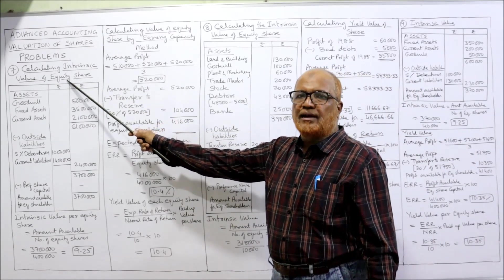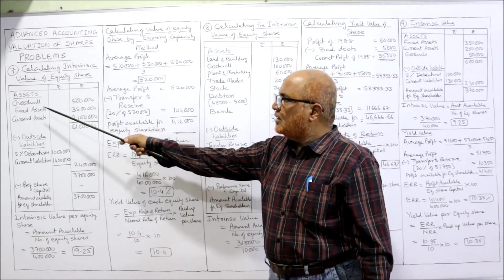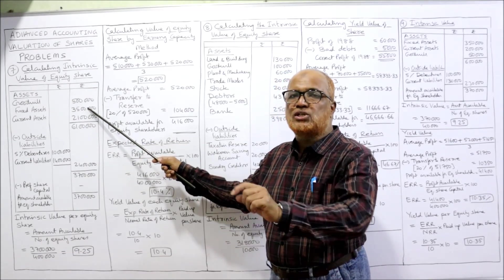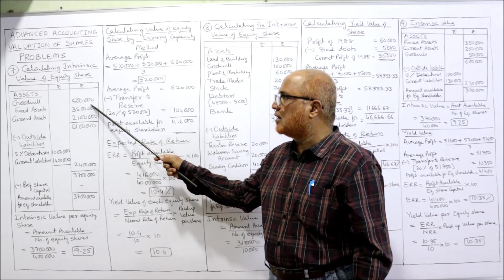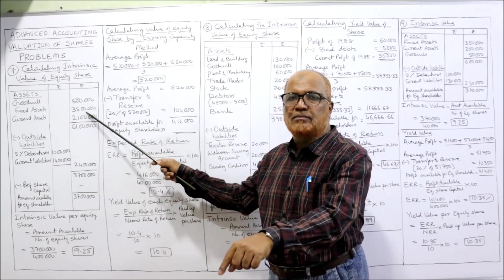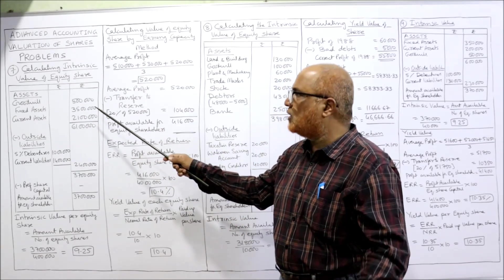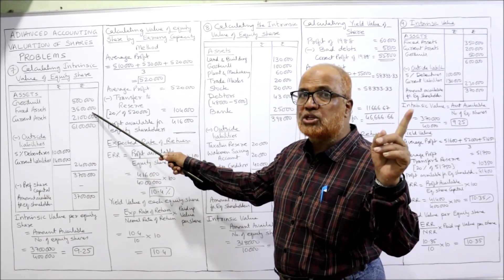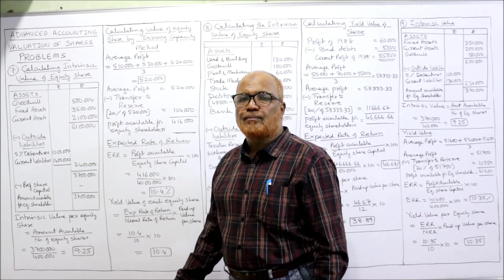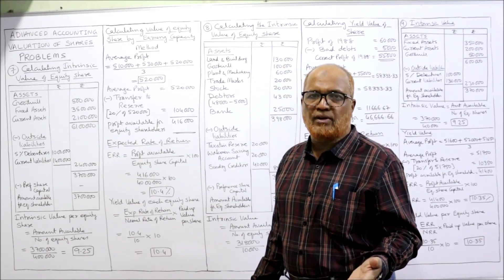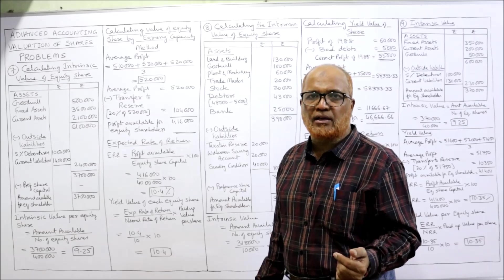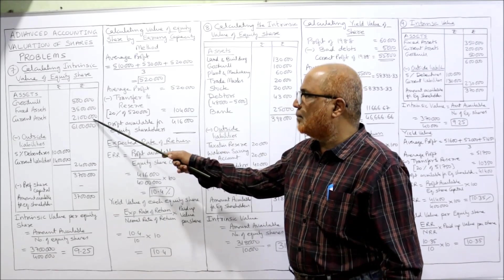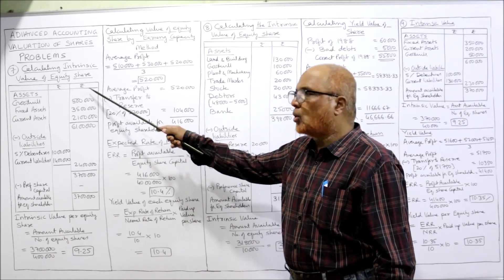Now calculating the intrinsic value. Take the assets: goodwill — present value is given in the adjustment. Fixed asset — present value given in the adjustment: 35 lakh. We are not taking the balance sheet value. Current assets — balance sheet value is given, so we are taking balance sheet value since current value is not given. Total of the assets: 61 lakh.